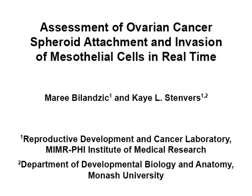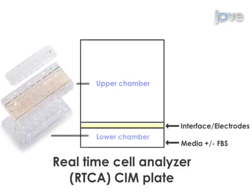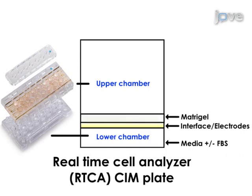The overall goal of this procedure is to rapidly quantify in real-time ovarian cancer cell invasion in a spheroid mesothelial cell co-culture model of metastasis. This is accomplished by firstly generating ovarian cancer spheroids from cell lines by culturing the cells under non-adherent conditions in methyl cellulose. The second step is to prepare a real-time cell analyzer CIM plate by coating the upper chamber of the two-chambered well with matrigel to mimic the basement membrane that underlies the mesothelium.